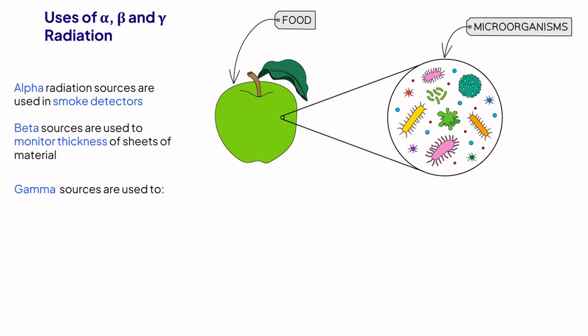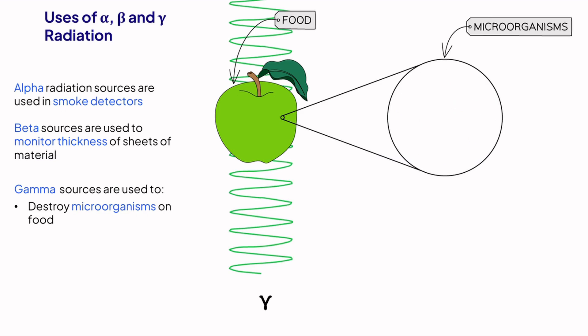All food contains microorganisms. This is completely normal but they can reduce the shelf life of food. Gamma radiation can be used in this scenario. The food products are irradiated with gamma, which destroys the microorganisms and extends the usable lifetime of the food.